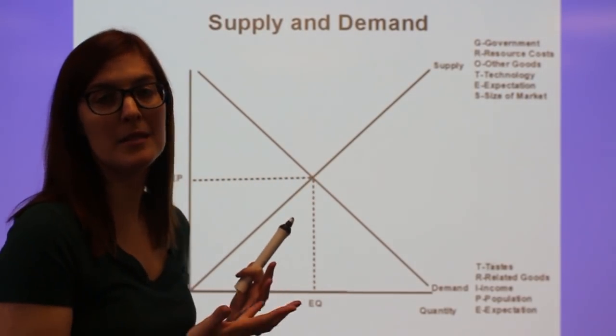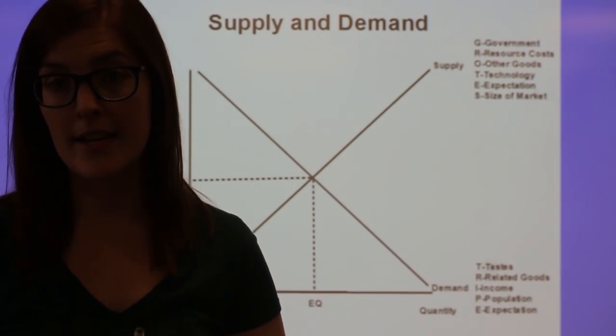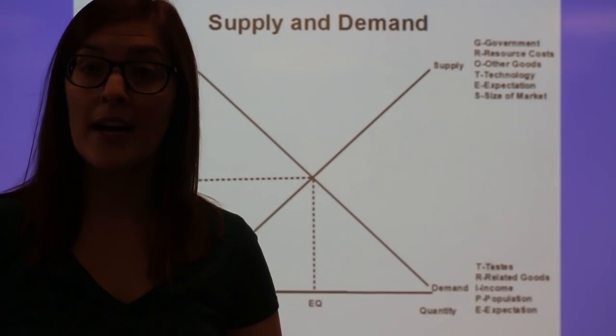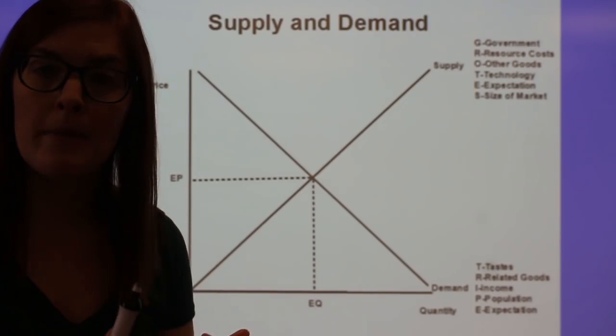So here's our basic supply and demand graph. And the first thing I wanted to go over with this graph are the things that move supply and demand, which are summarized by the two acronyms we learned, tripe for demand and groats for supply.